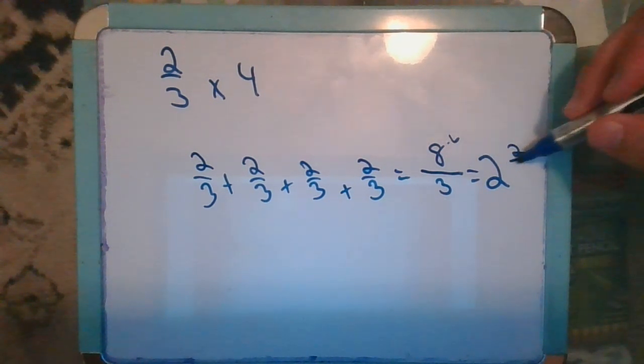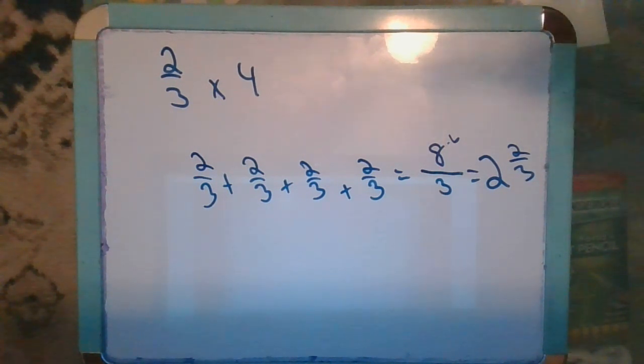So if I take six away to make that two units, that would leave me two-thirds. So two-thirds times four equals eight-thirds or two and two-thirds.